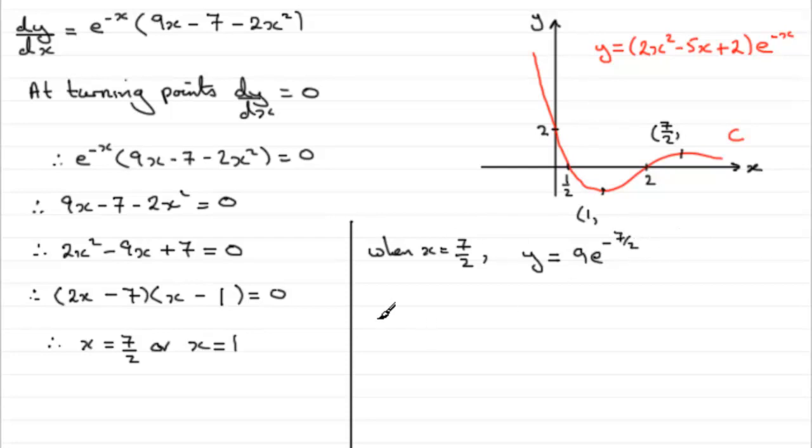And when it comes to taking x equals 1, if you work out y in a similar way, this bit here just simply comes to minus 1 and then you're going to have e^(-1). So we get y equals minus e^(-1).